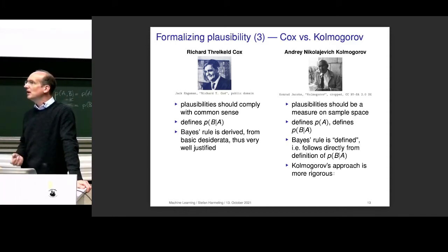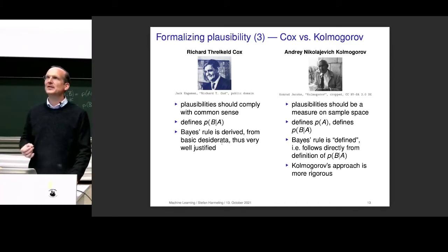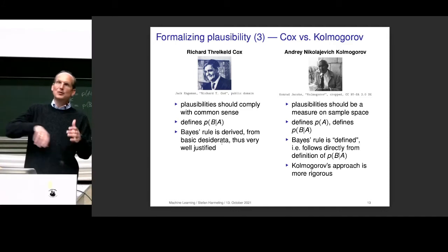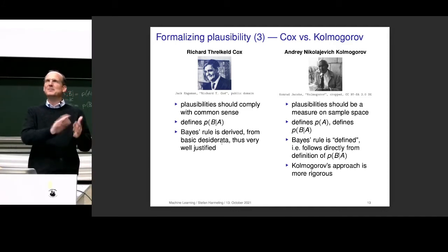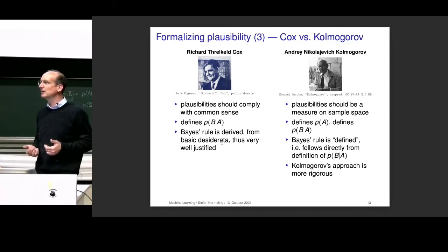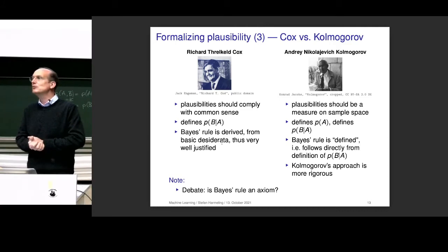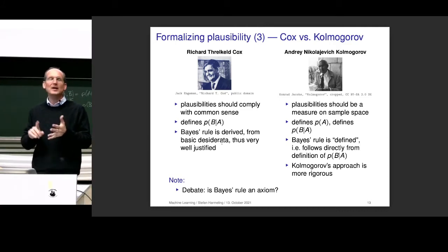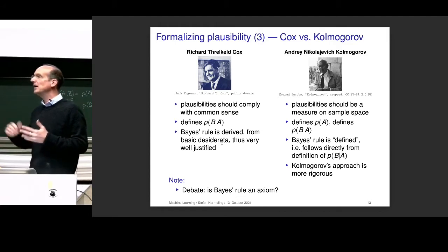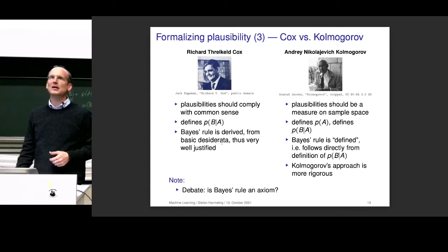Kolmogorov's approach is typically more rigorous. Cox uses the physicist's way — you do it until it works — while Kolmogorov is a mathematician with measure theory. Both approaches shed light on the deeper meaning. Even if people find bugs in Cox's proof, it's interesting that he derives the sum and product rule from a totally different starting point. At the end, we just want the sum rule and the product rule — the foundation doesn't matter so much for us.